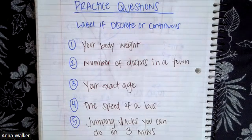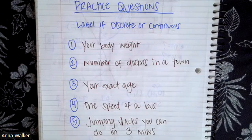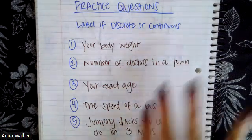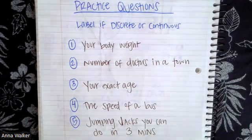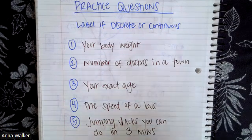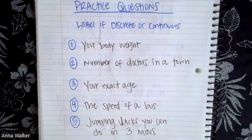The five scenarios are: your body weight, the number of doctors in a specific town, your exact age, the speed of a bus, and the number of jumping jacks you can do in three minutes. Label what you think is discrete or continuous. Check the table of contents for your answers, and double-check with your table mates or teacher if you need clarification on the difference between discrete and continuous.